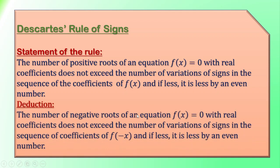Here is a deduction of this, which says that the number of negative roots of an equation f(x) = 0 with real coefficients does not exceed the number of variations of signs in the sequence of coefficients of f(-x), and if less, it is less by an even number. Now using this rule, let's find the correct option.